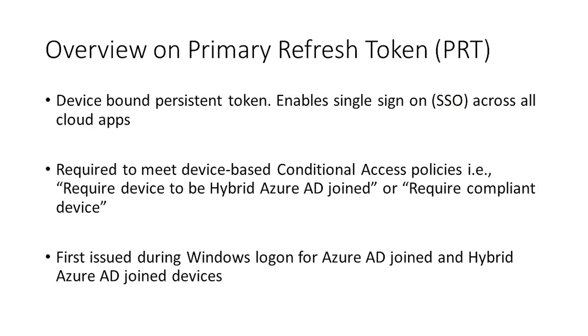Before we get into the details, let me first quickly give you an overview of the Azure AD primary refresh token, also called the PRT, as this is important for troubleshooting Windows sign-in issues. A PRT is a device-bound persistent token that enables single sign-on across apps and browsers. A PRT provides proof of device during token requests, and so it's essential to meet device-based conditional access policies. PRT is first issued during Windows logon for both Azure AD joined and hybrid Azure AD joined devices, so successfully getting a PRT is equivalent to a successful sign-in to Windows with Azure AD.